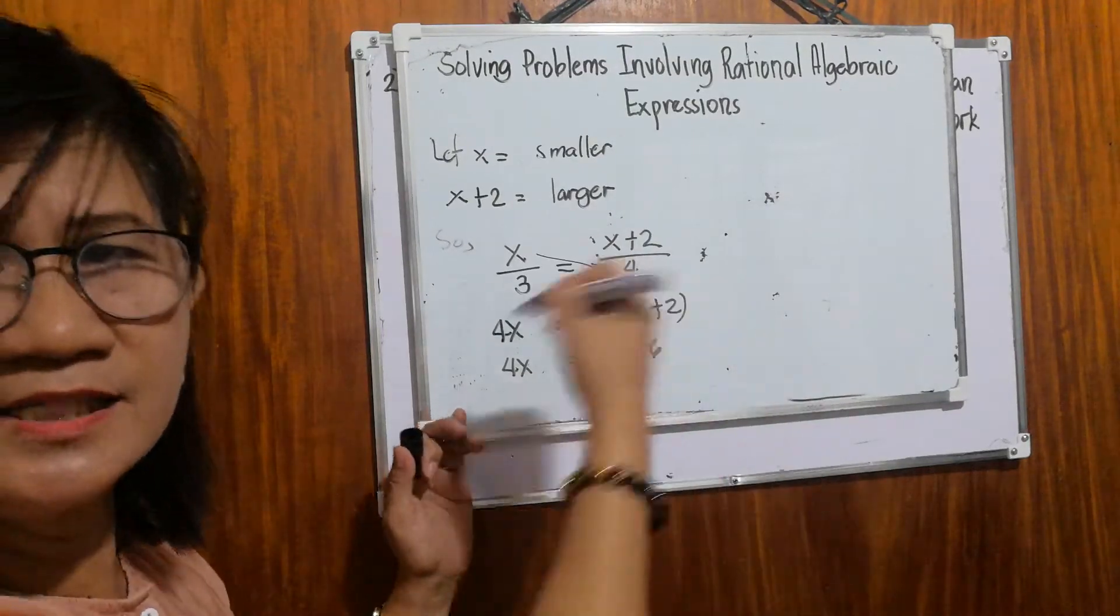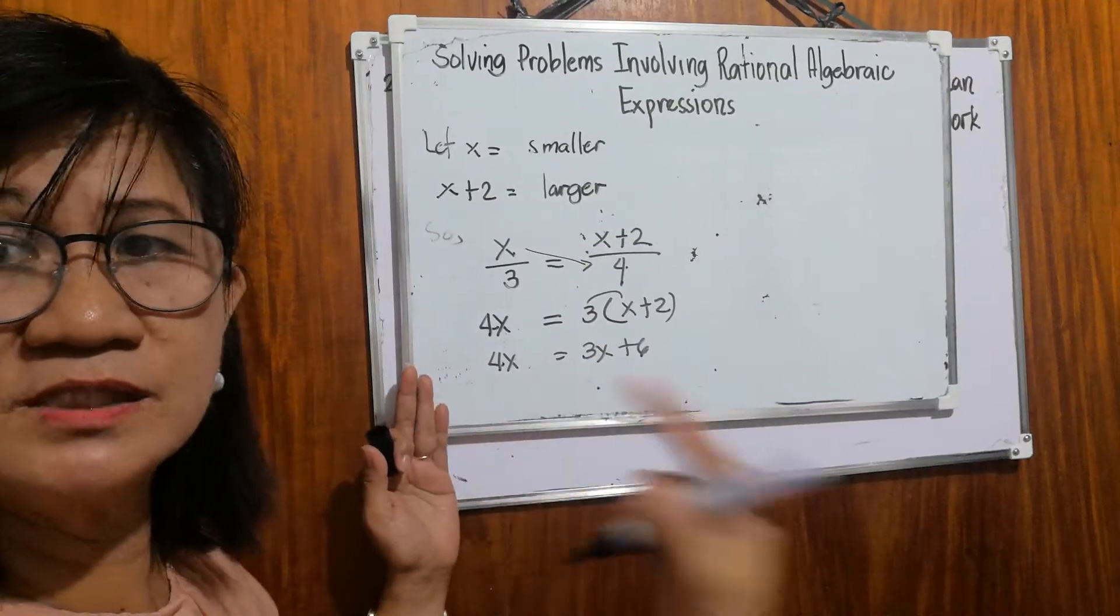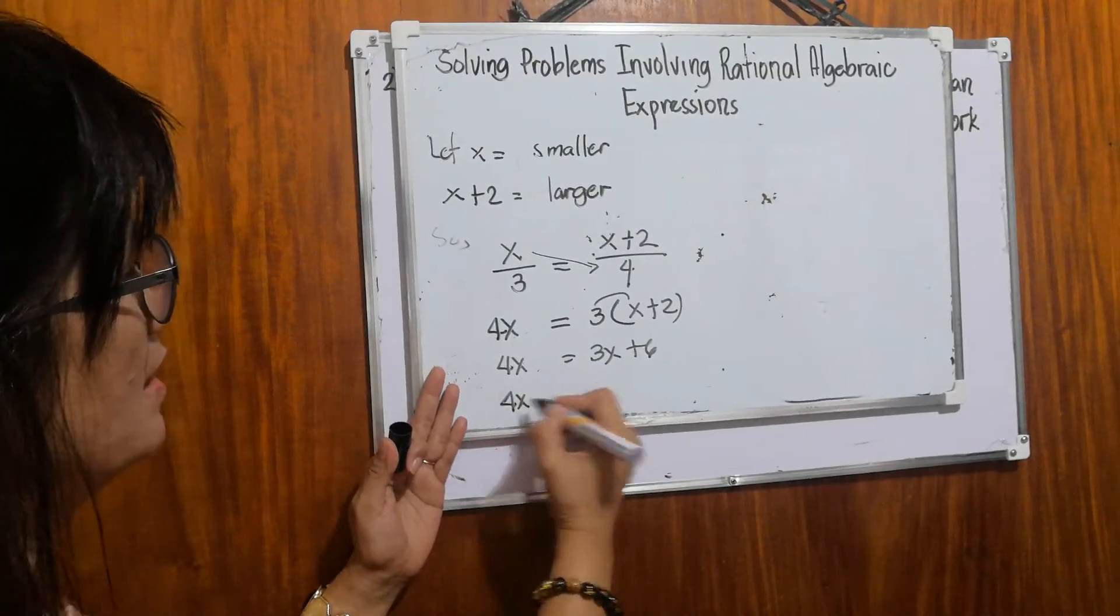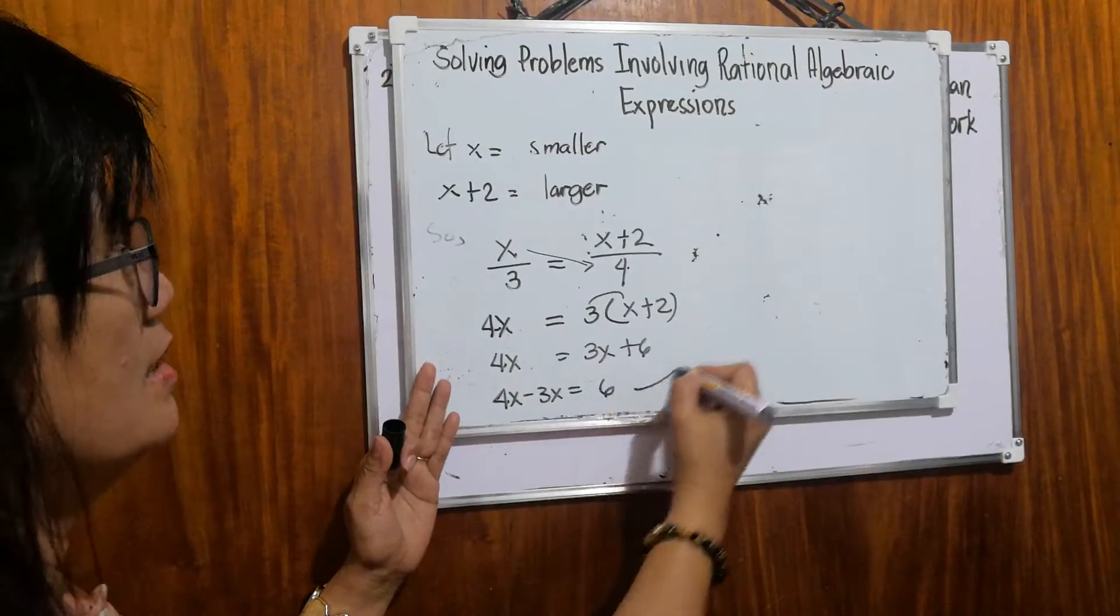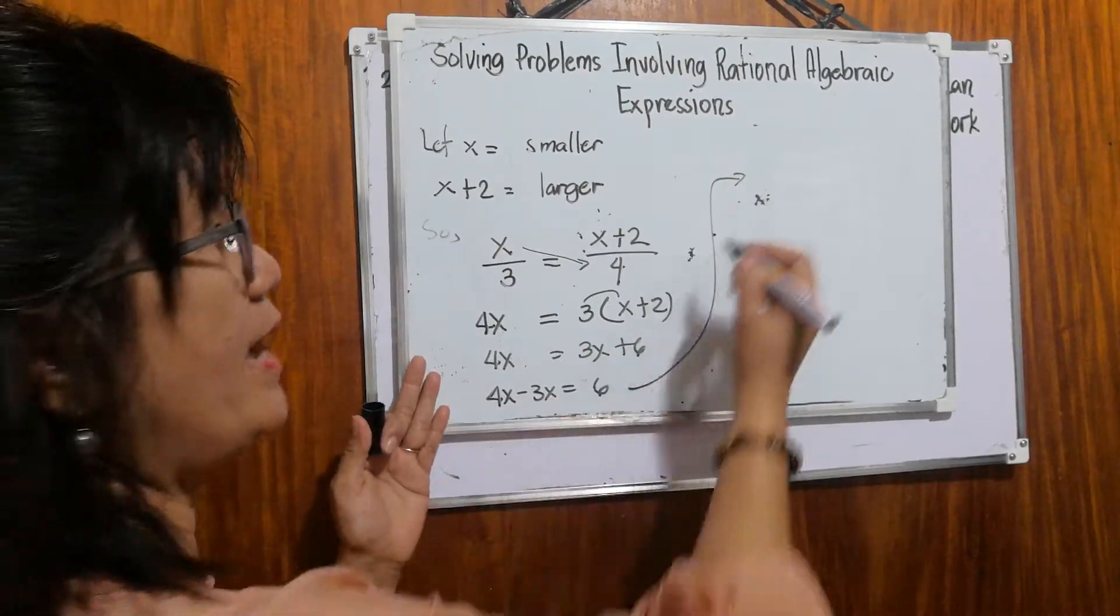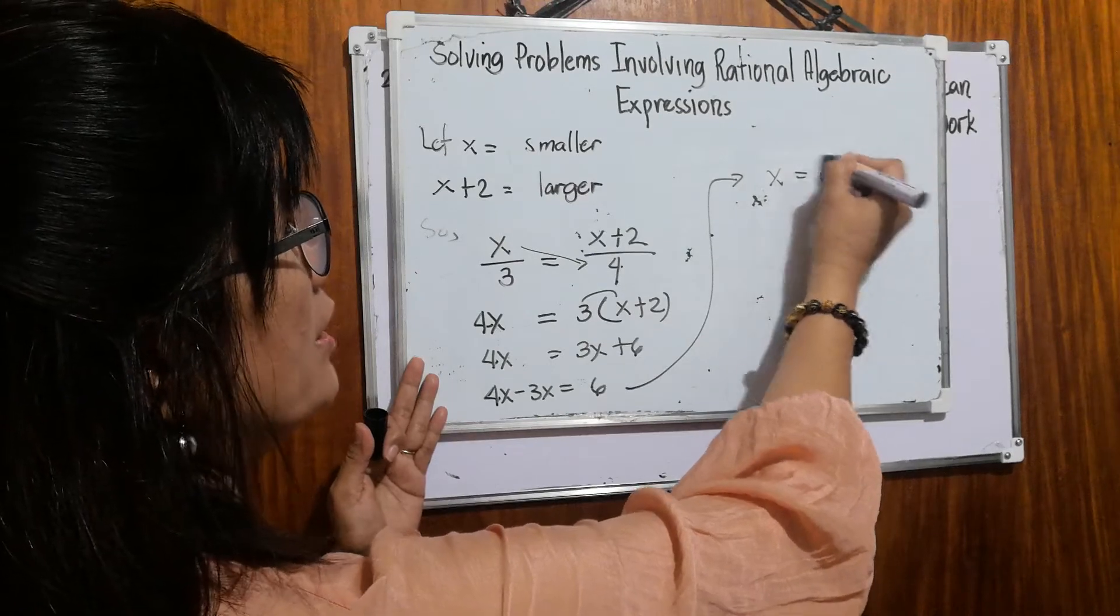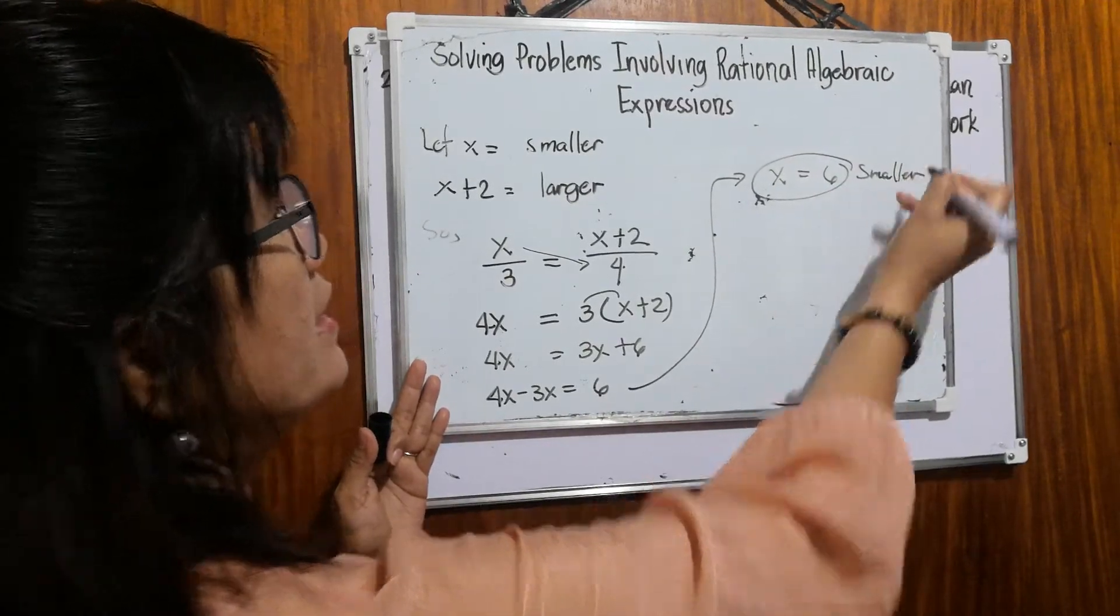Then we will transpose positive 3x to the left. Remember, the sign will change. So it will be 4x negative 3x equals six. Then 4x minus 3x equals x. You bring down six. Therefore, our smaller even integer is six.